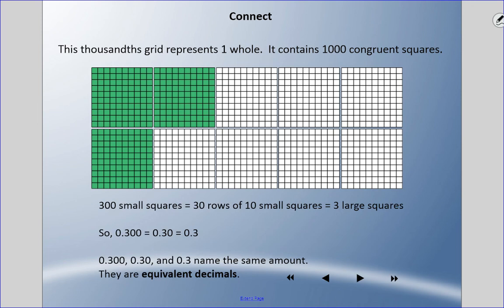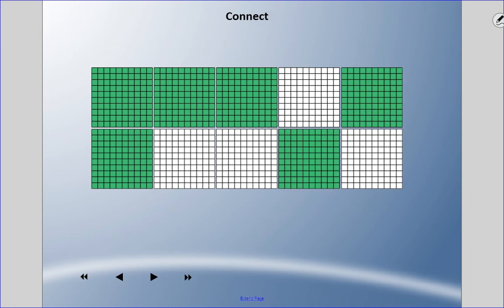So 300 thousandths, 30 hundredths, and three tenths all name the same picture — the picture hasn't changed. We call these equivalent decimals.